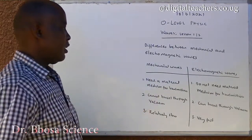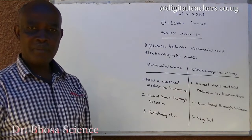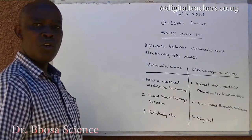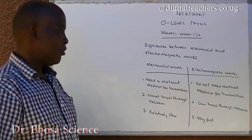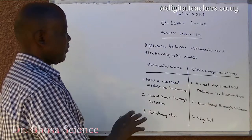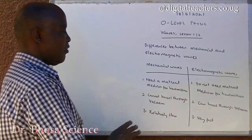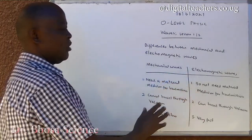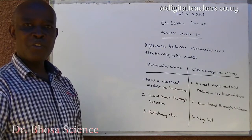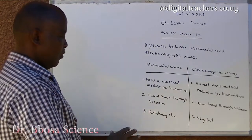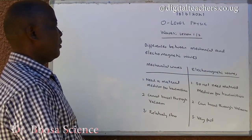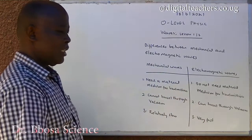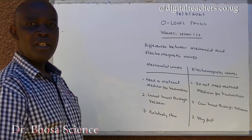Differences between mechanical and electromagnetic waves. Mechanical waves need a material medium for transmission. Electromagnetic waves do not require material medium for transmission. Mechanical waves cannot travel through vacuum. Electromagnetic waves can travel through a vacuum. Mechanical waves are relatively slow. Electromagnetic waves are very fast.